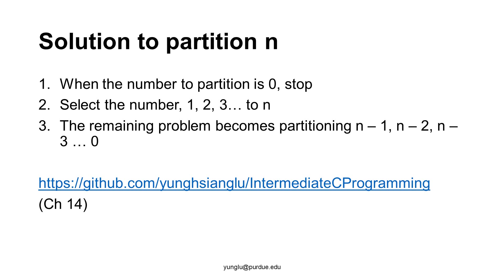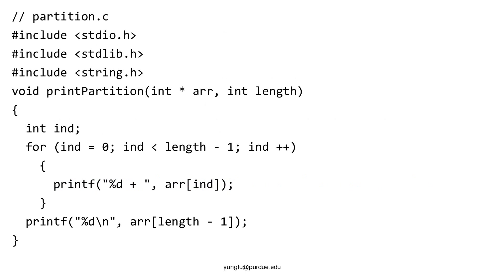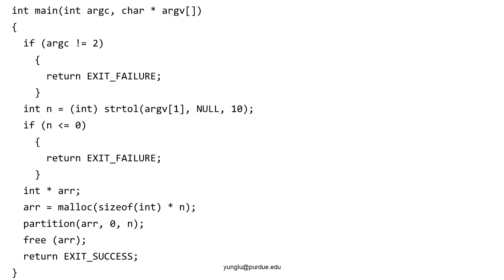You can find the partition program at this GitHub site. This program has three functions. The first function is the print partition function. It takes an array and an integer as the length of the array. This function prints the plus sign between the numbers in the array. The second function is the main function. It takes one integer from argv. This is the number to be partitioned. The main function allocates heap memory as large as the number, calls the partition function with three arguments: the array to store the used numbers, 0, and the number to be partitioned. Then the main function frees the memory and returns exit success.